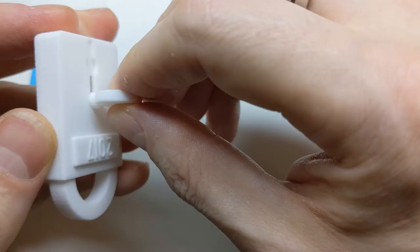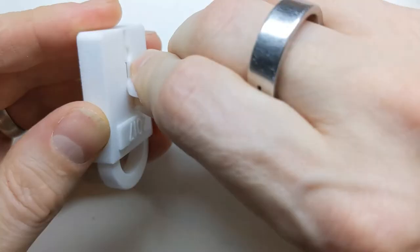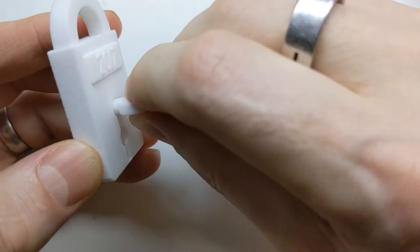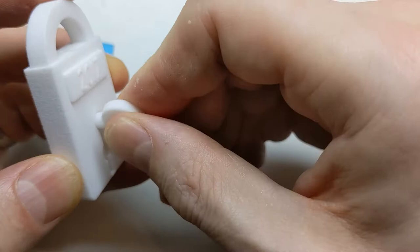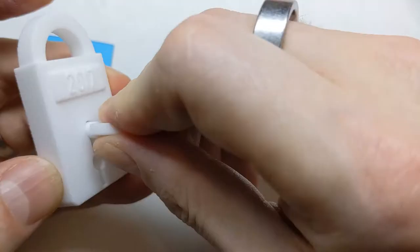If you pull the key out slightly, then it will turn all the way around. Similarly, up here, it won't turn. It catches on something.